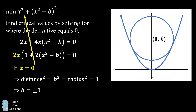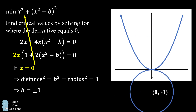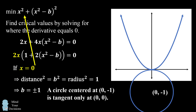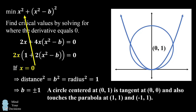Could these be the possible center of the circle? No. A circle centered at either (0, 1) or (0, -1) will not be tangent at two points of the parabola — we can see this geometrically. A circle centered at (0, -1) will be tangent only at the origin. A circle centered at (0, 1) will be tangent at the origin but will also touch the parabola at two other points, (1, 1) and (-1, 1). So these are not valid solutions for the circle being tangent to the parabola at exactly two points.